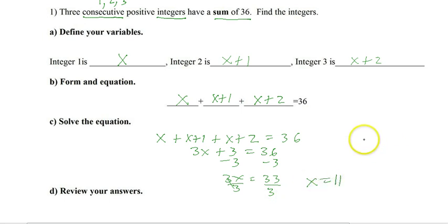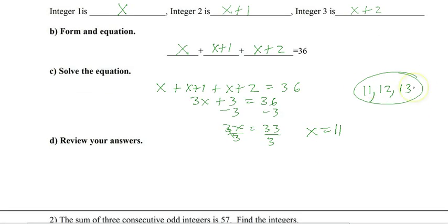So our three consecutive integers are 11 and add 1 and add 2, 11, 12, 13. How do we know they're correct? Well, they're consecutive integers, so that's the first part, it checks out. They just have to add up to 36. So that would be 36, check, so we know we're 100% correct.